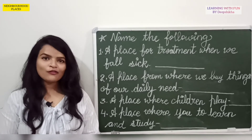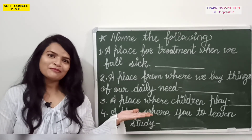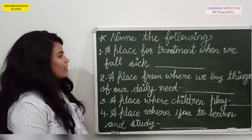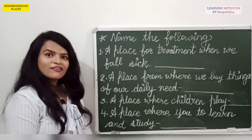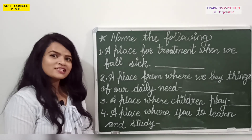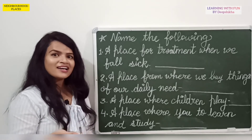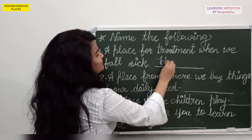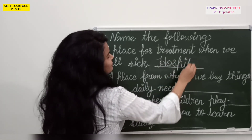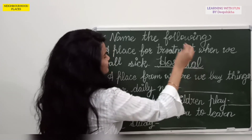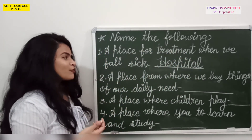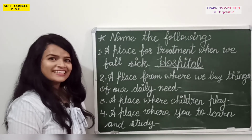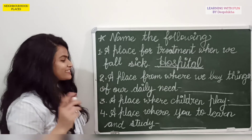Now we will do this exercise. Name the following. A place for treatment when we fall sick — where do you go when you fall sick? Yes, it is Hospital. Next, a place from where we buy things of our daily need — it is Market. M-A-R-K-E-T, market.